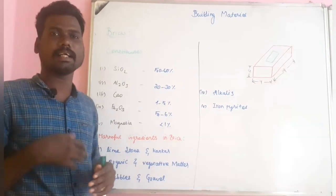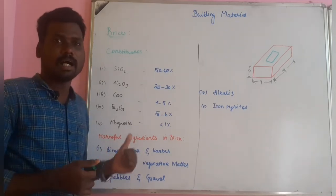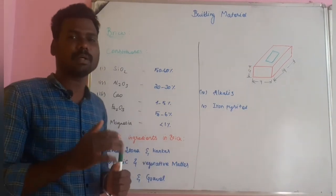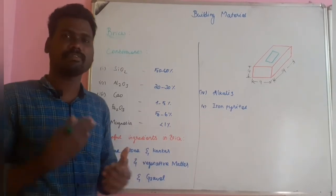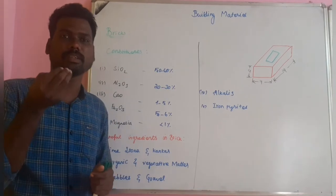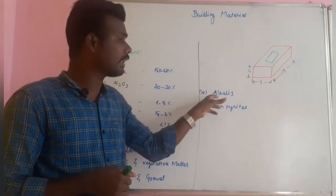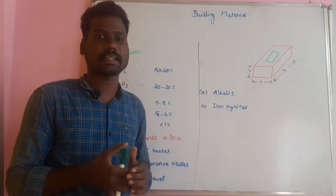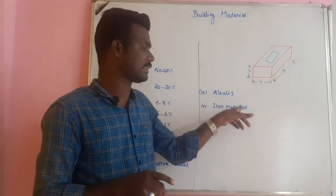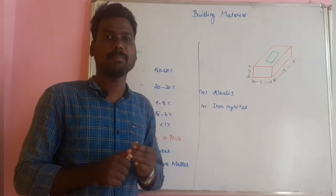Brick also contains harmful ingredients. For example, limestone and kankar are uneven forms of lime material that cause cracking and affect soundness. Organic and vegetable matter cause non-uniformity in the brick. Pebbles of uneven size also cause non-uniformity. Alkalis are a harmful ingredient that cause efflorescence on the brick surface — this is a direct effect. Iron pyrites cause the brick to split easily.